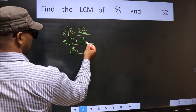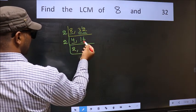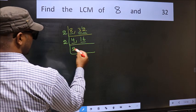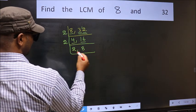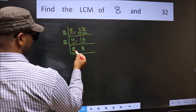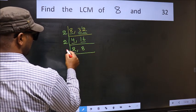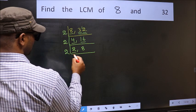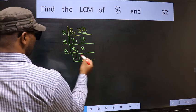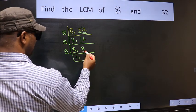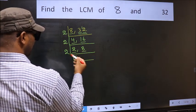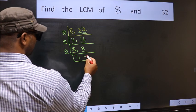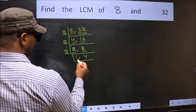Now the other number is 16. When do we get 16 in the 2 table? 2, 8, 16 — 2 eights are 16. Now here we have 2; 2 is a prime number, so 2 ones are 2. The other number 8 — when do we get 8 in the 2 table? 2 fours are 8.